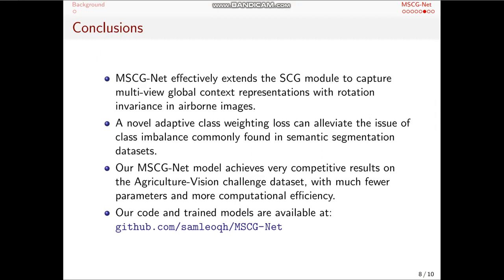To sum up, in this work, we proposed a novel neural network for semantic segmentation tasks, so-called MSCG-Net, which effectively extends the SCG module to capture multi-view global context representations with rotation invariance in airborne images. And also, we proposed a novel adaptive class weighting loss, which can alleviate the issue of class imbalance, which is commonly found in semantic segmentation tasks.